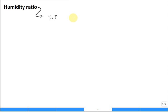A nice way to think about it is omega is the symbol and here are the units. It's kilograms of water vapor per kilogram of dry air. Those are the units for this variable.